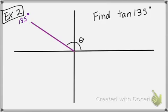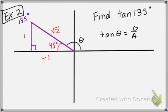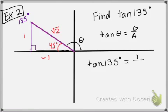What if I ask you to find the tangent of 135? So 135 falls in quadrant 2, but we're not actually going to work with 135. I create a right triangle and work with the reference angle, which is 45 degrees. This is a 45-45-90, so we mark it up: 1, 1, root 2. This value right here is going to be negative because it's moving towards the left. Tangent is opposite over adjacent. Opposite is 1, adjacent is negative 1. So the tangent of 135 degrees is negative 1.